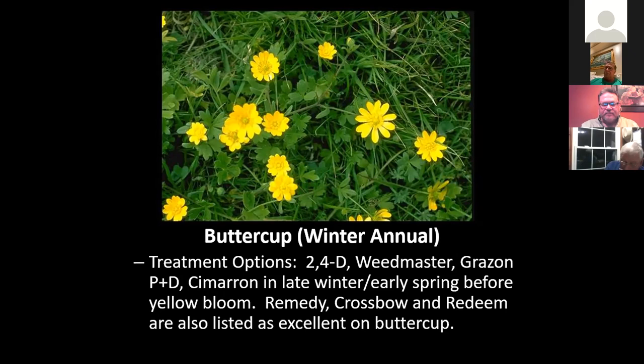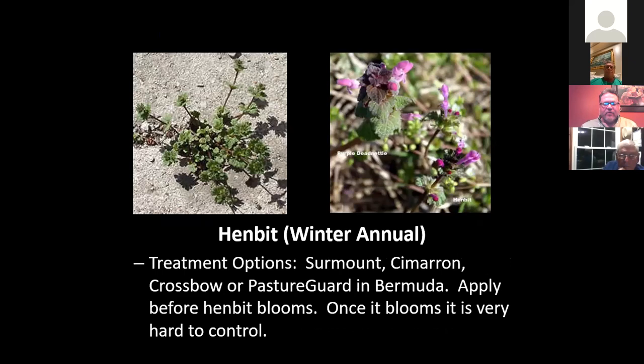Henbit — treatment options include Cimarron, Surmount, Pasture Guard. You've got to apply it before it blooms. If you wait until you get those purple blooms, it's hardened off and mature, it's not going to absorb that herbicide as effectively, and you're not going to get as good control.